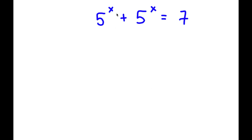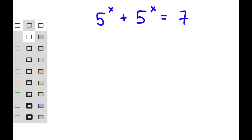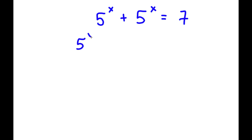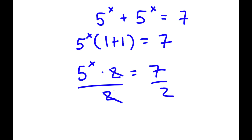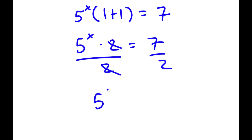In this problem, I have φ to the power of x plus φ to the power of x is equal to 7. The first thing I'm going to do is factor out φ to the power of x from my left-hand side. So now I have φ to the power of x times 1 plus 1 is equal to 7. But 1 plus 1 is 2, so I have φ to the power of x times 2 is equal to 7. Now I can divide both sides by 2, so I get φ to the power of x is equal to 7 over 2.